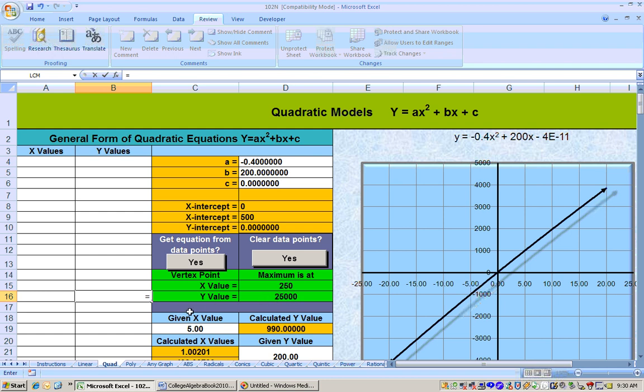This would be what the length should be, and to get what the width should be, or to get the Y value, the distance up and down. This is the distance across. 250 is the distance across, but to get the distance up and down, we just take this number, the area, divided by the length, and we get 100. So that would be the dimensions to give you the maximum area of 25,000 square feet.